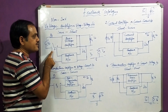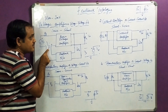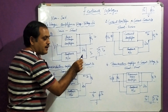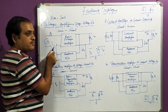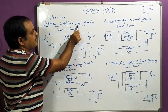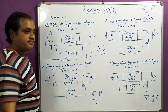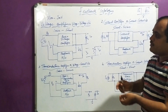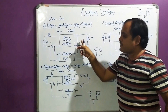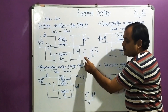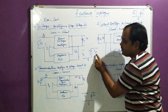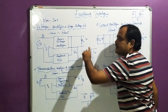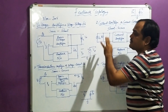The output voltage is sampled and it is going to be mixed with the input voltage. Therefore this feedback structure is also called as voltage-voltage feedback structure. Since input is also voltage and output is also voltage, the equivalent circuit is called a voltage-controlled voltage source (VCVS).